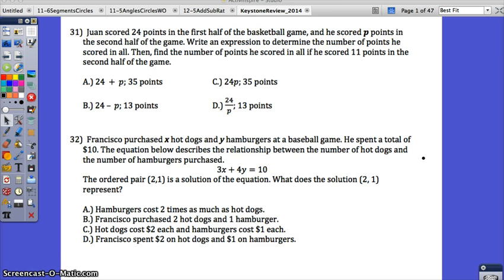Juan scored 24 points in the first half of the basketball game. He scored P points in the second half of the game. Write an expression to determine the number of points he scored in all. Then find the number of points he scored in all if he scored 11 points in the second half of the game.